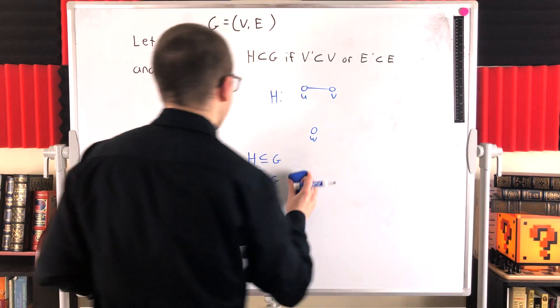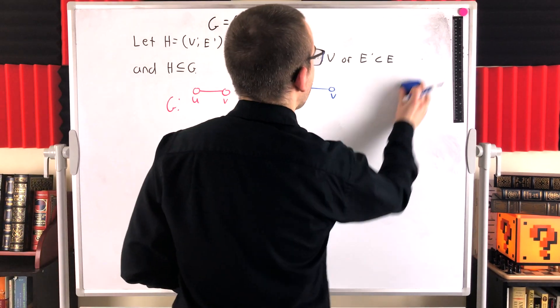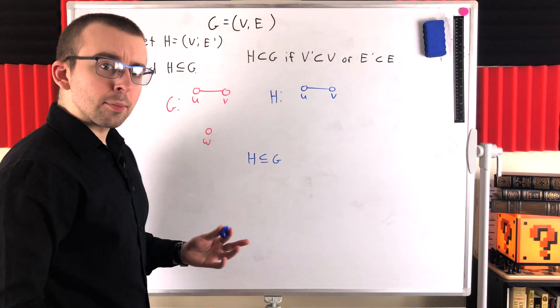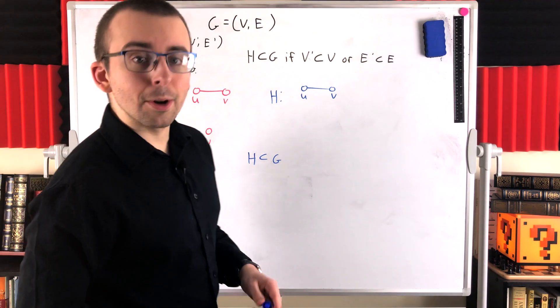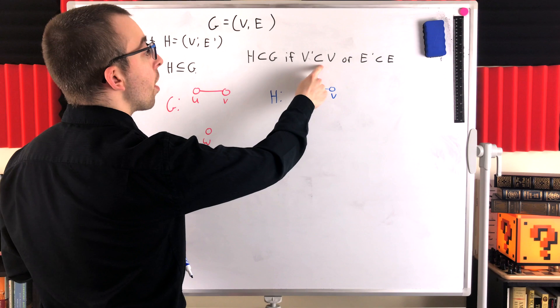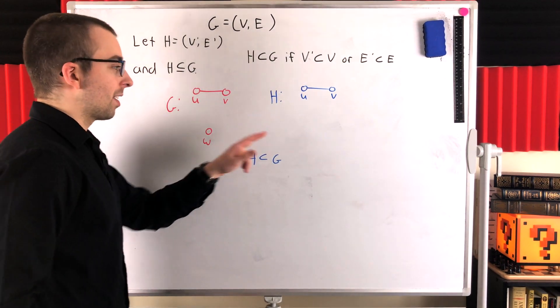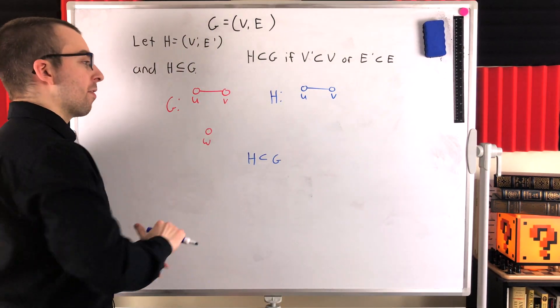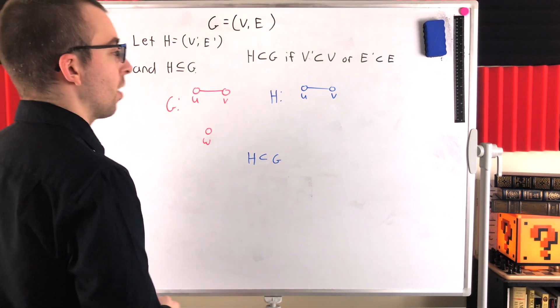However, we could change the example by changing our graph H. Let's say we get rid of that vertex W. Then, in this situation, H is a subgraph of G, but furthermore, H is a proper subgraph of G. In this case, the vertex set of H is a proper subset of the vertex set of G. G has this extra vertex W that H doesn't have. So, H is a subgraph of G that's not equal to G. Thus, by definition, it's a proper subgraph of G.